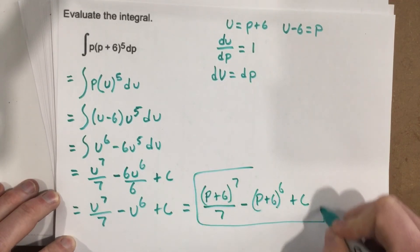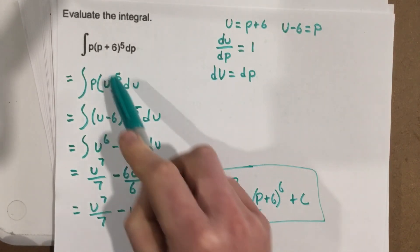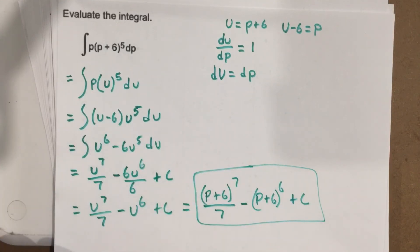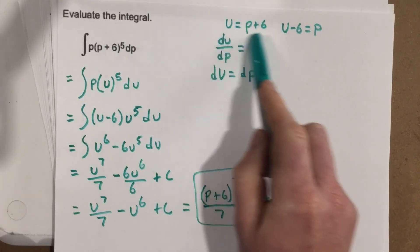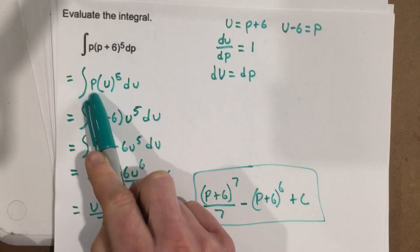And that is our integration using u substitution. To recap: pick the inside of the expression, set it equal to u. Then we use that expression to rewrite it in terms of p to replace it for that other p value there.